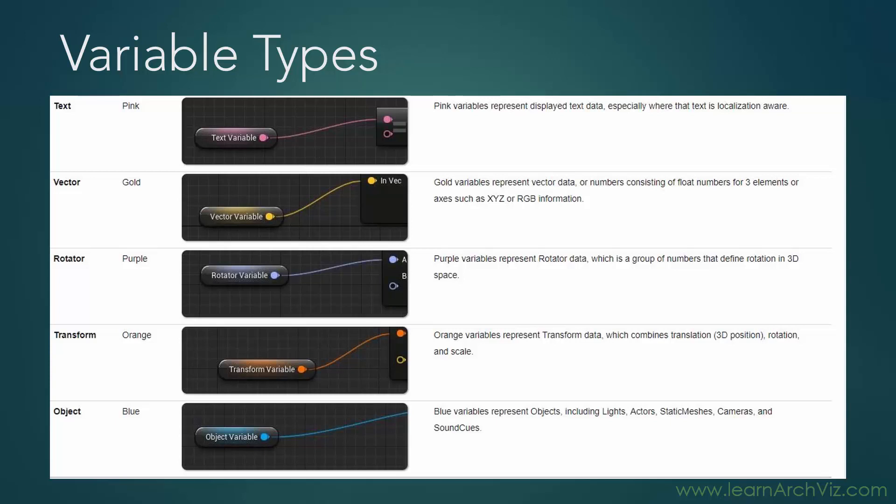There are also rotator variables, which define rotation in 3D space. There's the transform variable, which combines translation (the 3D position), rotation, and scale. That is basically a group of three vectors: position is a vector of three numbers, rotation is a vector of three numbers, and scale is a vector of three numbers — all three combined give us the transform. And then there's the object variable, which represents objects including lights, actors, static meshes, cameras, and sound cues. Basically all the stuff in our scene that we want to adjust can be a variable type — those are the blue ones, the object variables.